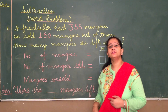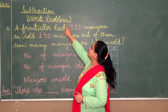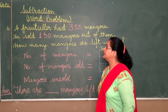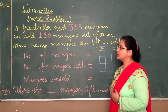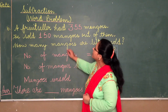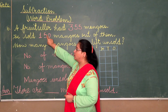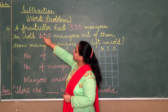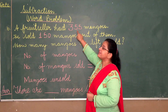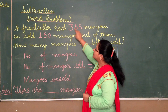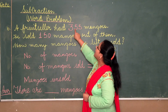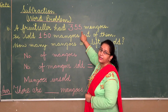Now I am going to explain subtraction with a subtraction word problem. You must have learnt word problems in addition as well, so here I am going to give you one more example. First we will read the problem: a fruit seller had 355 mangoes.